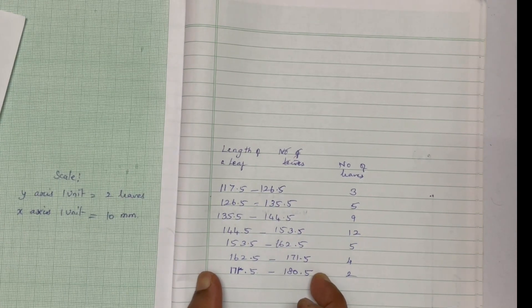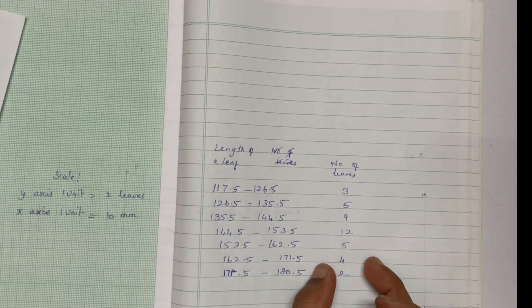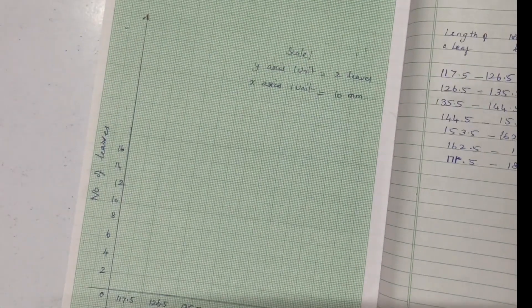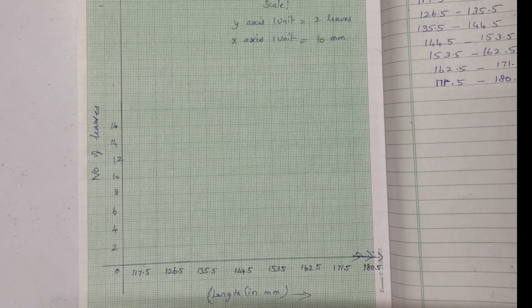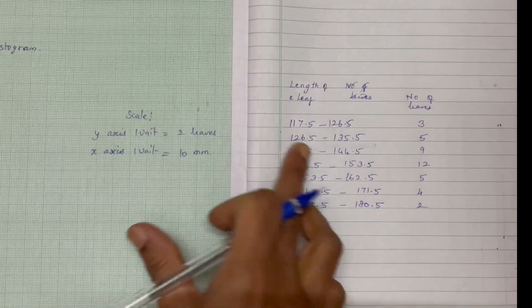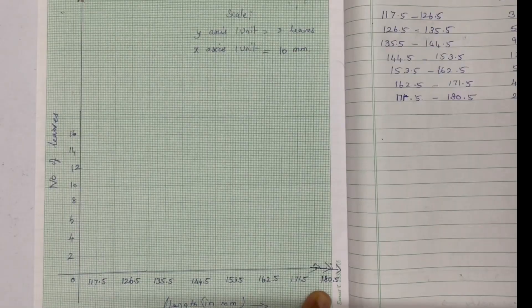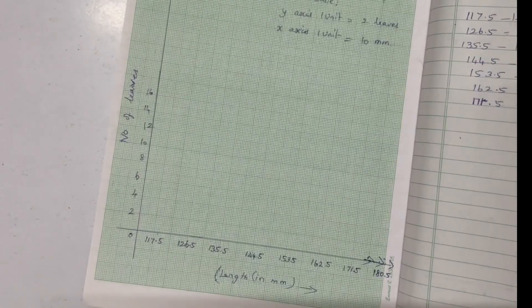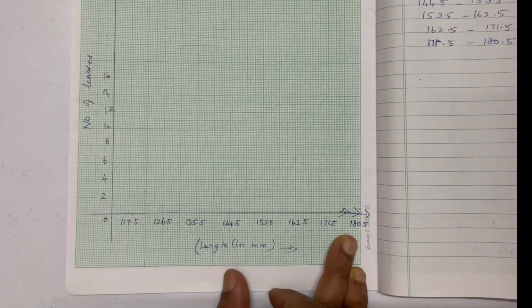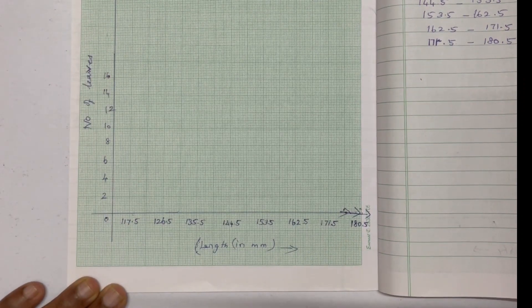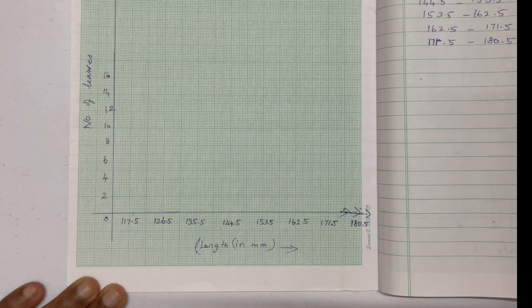The interval is on the x-axis and the y-axis is the number of leaves. Let's plot this — the x-axis starts at 117.5. The number of leaves is plotted on the y-axis. Now we have done the histogram with continuous intervals on the x-axis and number of leaves on the y-axis.